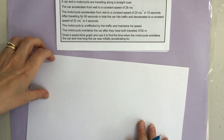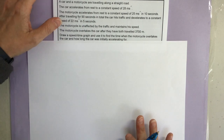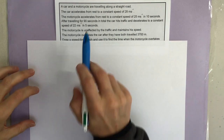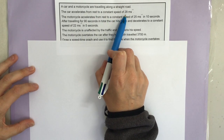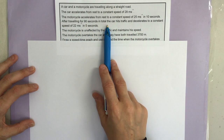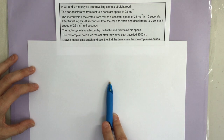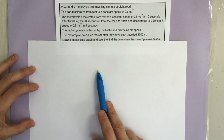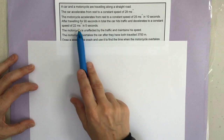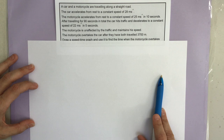So the next example — example four — we've got two vehicles: a car and a motorcycle travelling along straight roads. The car accelerates from rest to a constant speed of 28. The motorcycle accelerates to a constant speed of 25 in 10 seconds. After travelling for 90 seconds in total, the car hits traffic lights and decelerates. The motorcycle is unaffected by the traffic and maintains its speed of 25 metres per second for the rest of the journey.